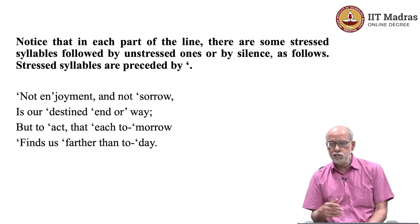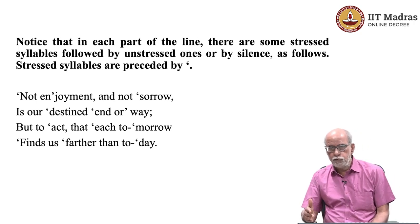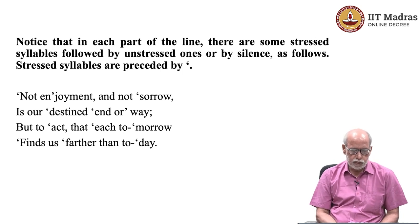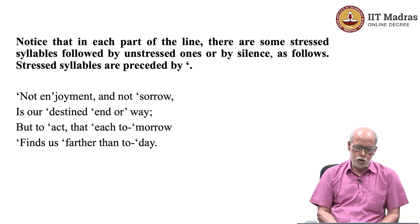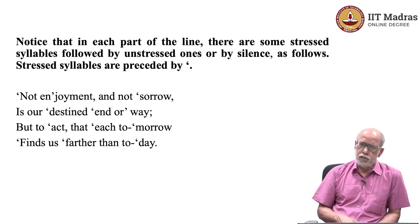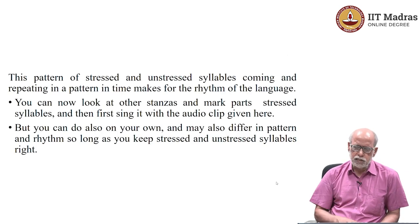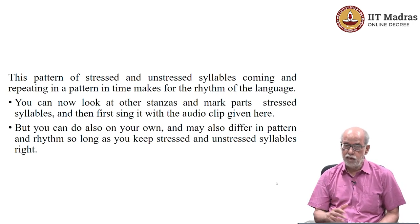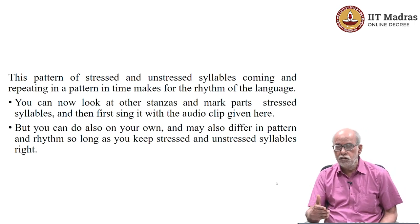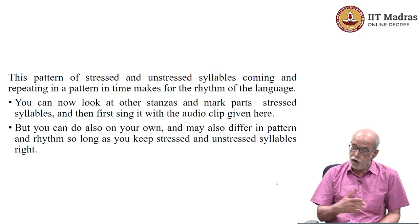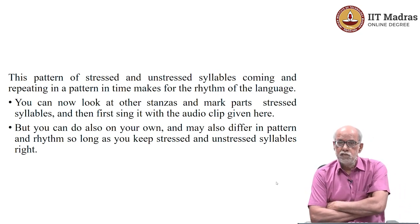This alternating pattern of stressed and unstressed syllables — a few unstressed followed by stressed, and a stressed followed by a few unstressed — makes the pattern. That is why you can sing: 'Not enjoyment and not sorrow is our destined end or way, but to act that each tomorrow finds us farther than today.' It goes in a regular, regular beat, rhythm. This pattern of stressed and unstressed syllables repeating in a certain length of time — how many, at what level, which unit, how long — these three 'how' questions, their answers, make the rhythm.